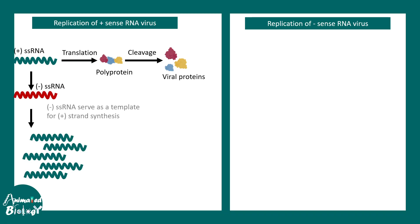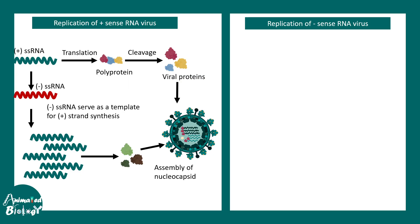While replicating, the positive sense RNA has to replicate through an intermediate of negative strand RNA. The negative strand RNA serves as a template for positive strand synthesis. Eventually more genetic material gives rise to more proteins, and the proteins and positive sense RNA would be packaged into a viral nucleocapsid to produce a new virus.